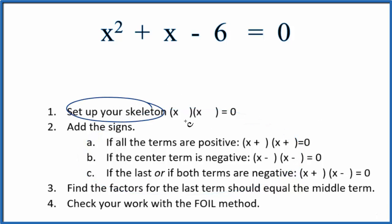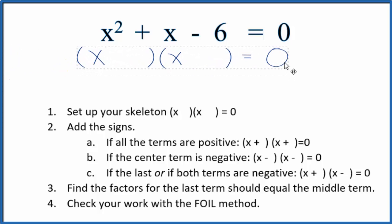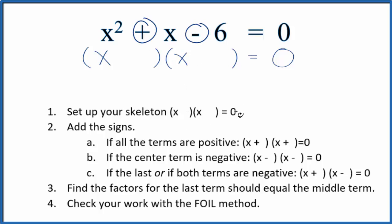First we'll set up a skeleton equation (x )(x ) = 0. Once we have that, we're going to add the signs into our parentheses. So we have a positive and a negative in this equation. Since the last term is negative, we're going to put a positive and a negative inside the parentheses.